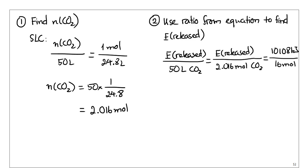I do find it really useful to include the units in the ratio, just so you remember what unit you're supposed to have with everything and whether you need to do a conversion of unit. So the energy released here is going to be 2.016 times 10,108 over 16. I'm using the exact value from the calculator. So we're going with 1,273.689 kilojoules.